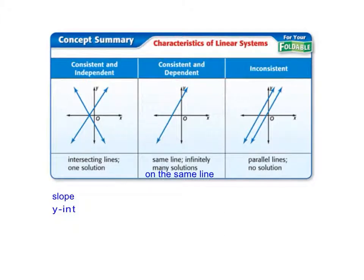So the characteristics of linear systems: when we talk about linear systems, you can see that we have two lines or two equations of a line that we're going to graph, and you're going to have three situations. You're going to have two lines that intersect in a single point — two lines always intersect in a single point — so there will be one solution. They call it consistent and independent. Independent means one solution; consistent means there is one.